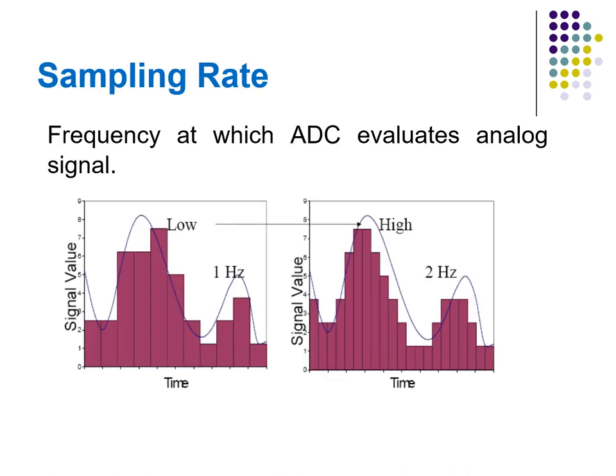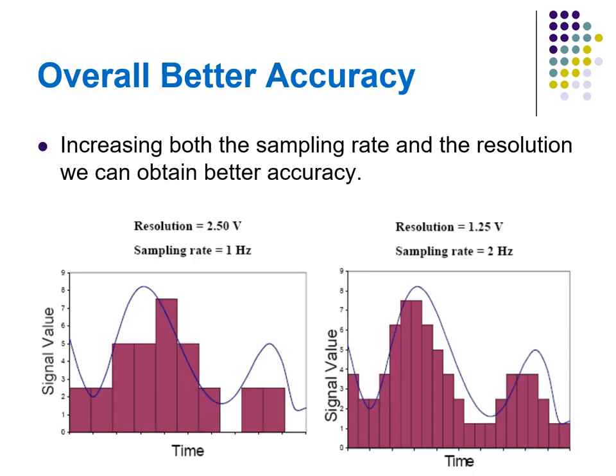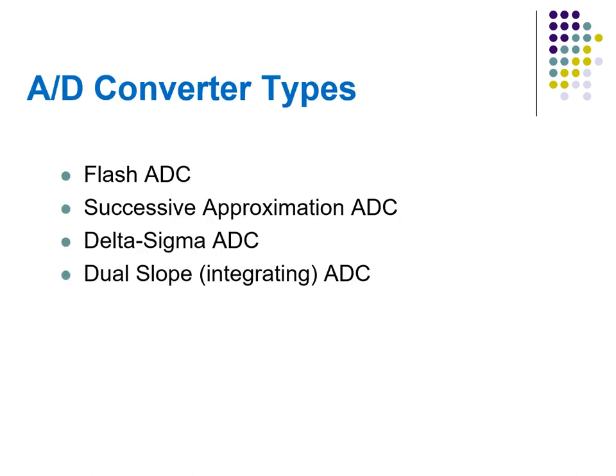Sampling rate is the frequency at which the ADC evaluates the analog signal. As we see in the image, evaluating the signal more often more accurately depicts the ADC signal. The overall better accuracy can be obtained by increasing both the sampling rate and the resolution. There are different types of analog to digital converters: flash ADC, successive approximation ADC, delta-sigma ADC, and dual-slope integrating ADC.